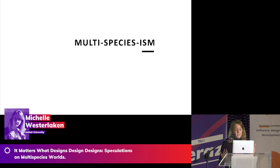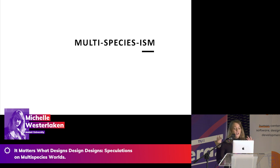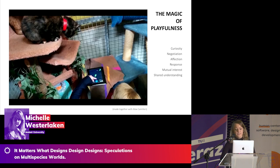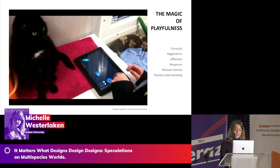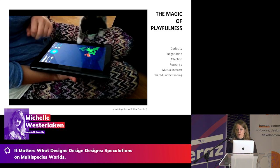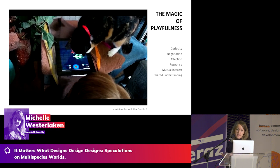When it matters what designs design designs, I started thinking maybe we need to look at the already existing traces of these multi-species worlds — places and situations where multi-species relations, meaning the opposite of speciesist relations, already exist. By identifying those traces, we can start to get an idea of what this multi-species world could actually mean. One of the places where I found an opening in multi-species relationships is in playfulness. This is a short video showing some playtesting we did when we prototyped a tablet game you can play both with the cat and the human simultaneously.